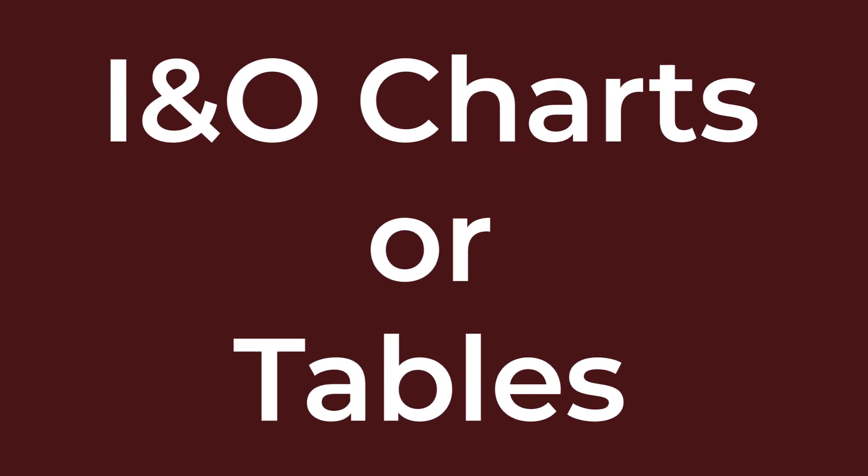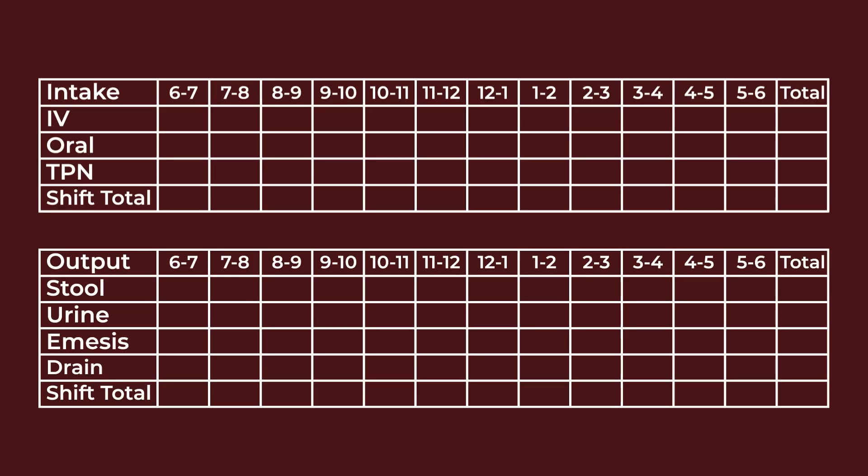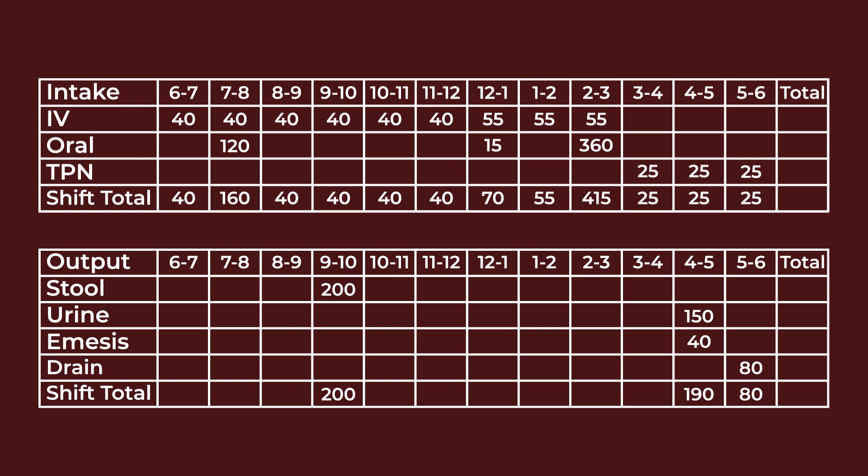Healthcare teams record intake and output using I&O charts or tables. These tables are usually set up as a simple two-column system — one side for intake and one for output. Each time the patient consumes or loses fluid, the amount and type are recorded in the appropriate section, along with the time. Measurements are usually recorded in milliliters to ensure accuracy. Totals are calculated at the end of a set period, often every shift or every 24 hours.